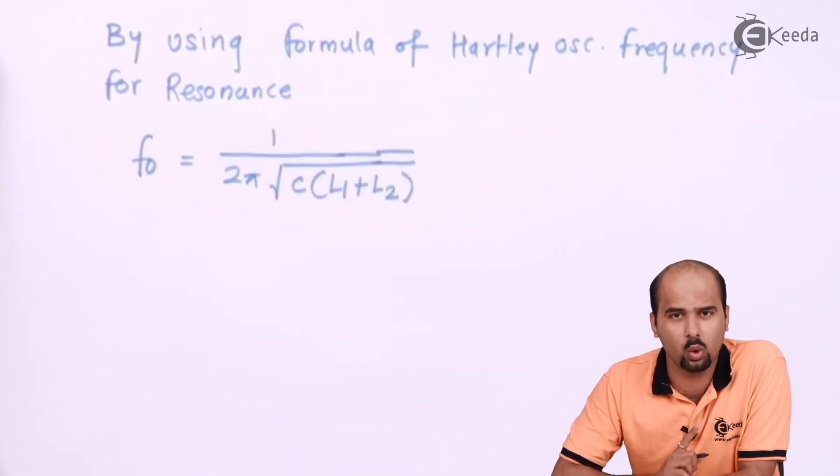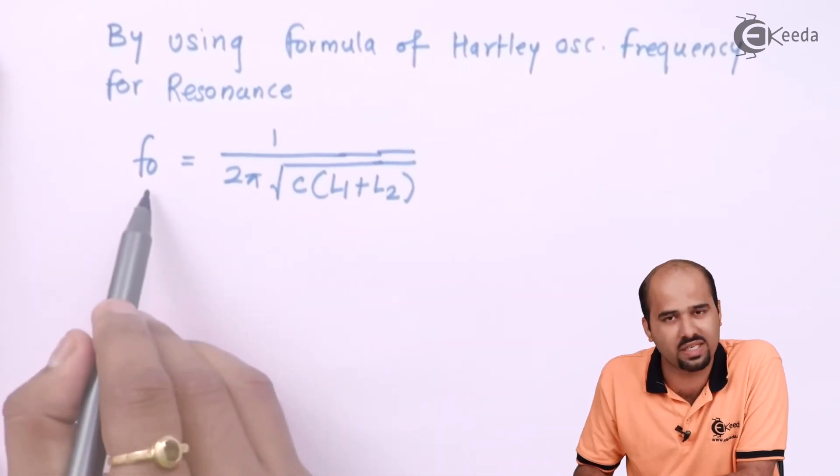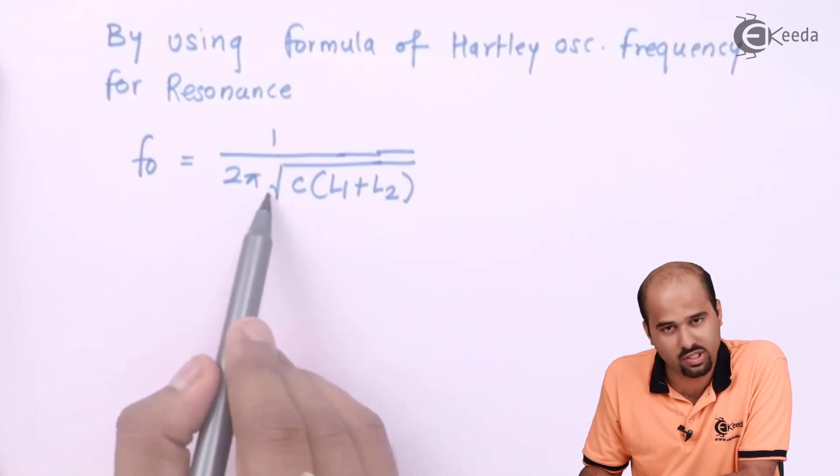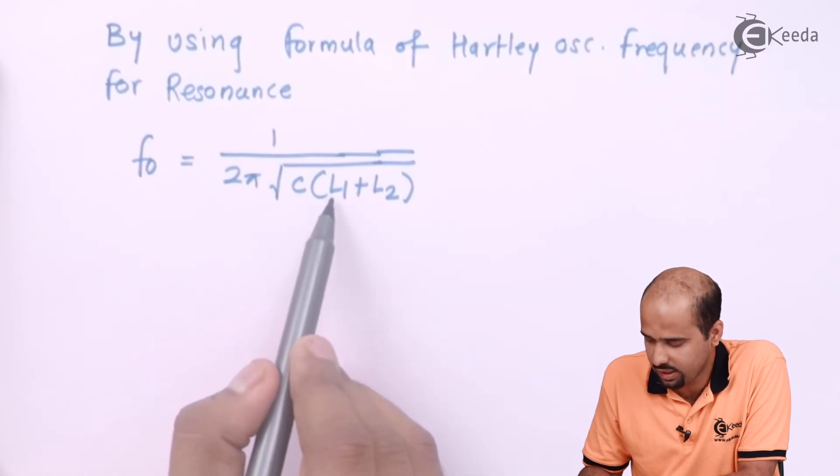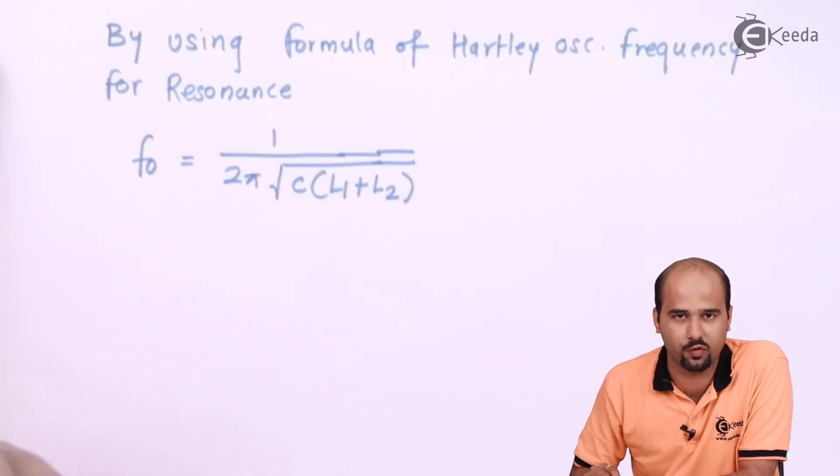If we find that one, only one unknown is there, we can easily find out that particular unknown, provided all the values are given. F0 is given, yes, 100 kilohertz. Then 2 pi is a constant value, C is given 0.015, then L1 is given and L2 we have to find out, right?